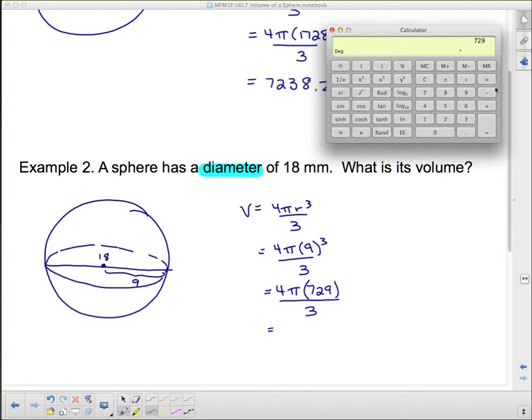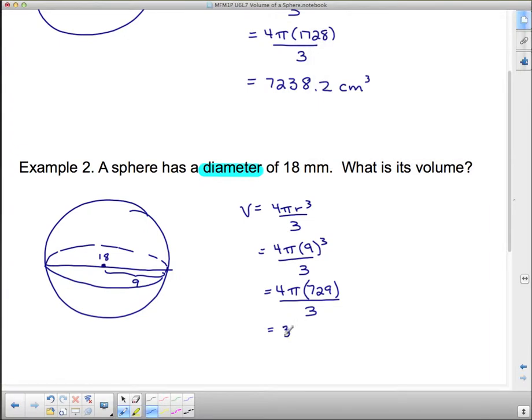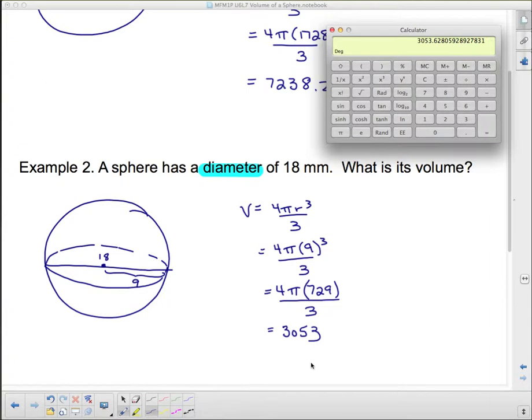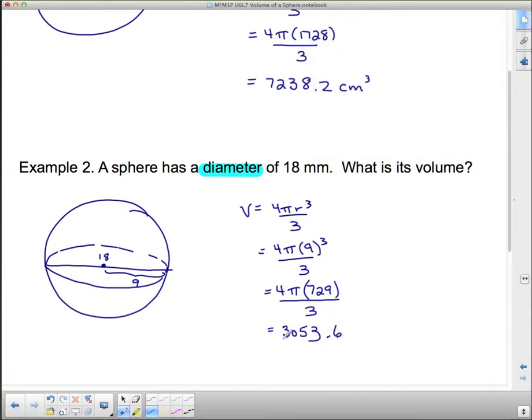Times 729 ÷ 3 is 3053.6, and that's approximate, so I'm going to put a wavy equals in front of it. It's measured in millimeters, and since it's volume, it's going to be millimeters cubed.